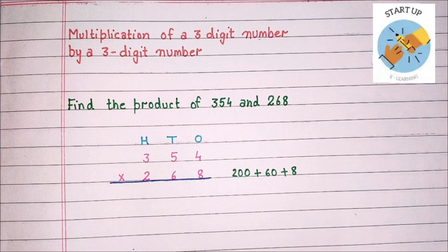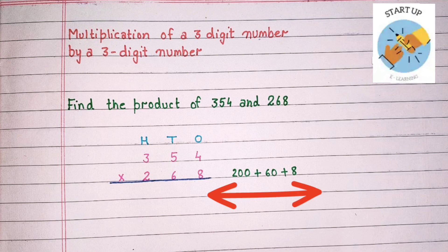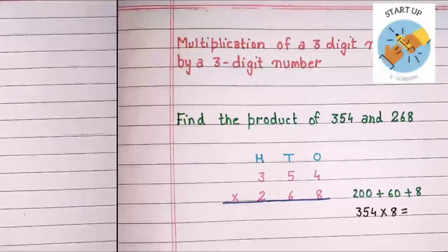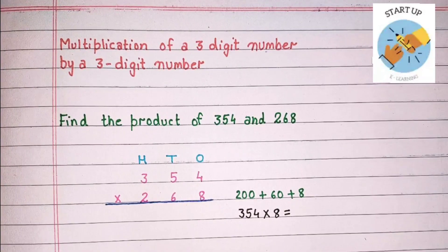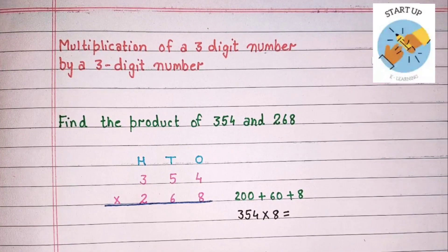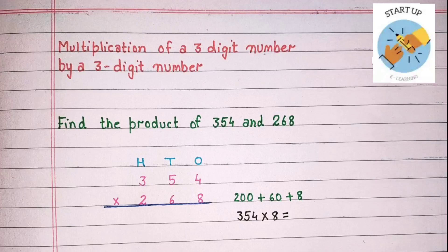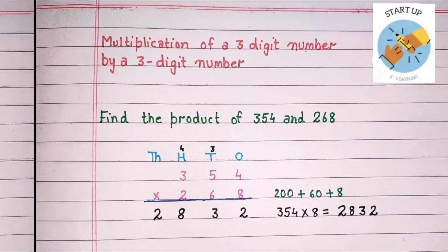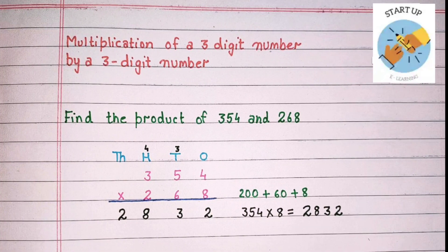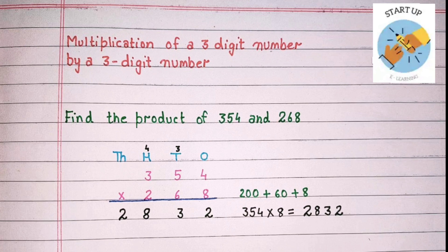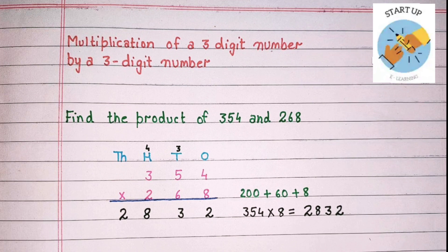To solve this sum, let's expand 268 into 200 plus 60 plus 8. First of all, we will multiply 354 by 8, the digit at the ones place of the multiplier. We will multiply 8 by the digit at the ones place: 8 fours are 32. 2 will be written under the ones place and 3 will be carried on to the tens place.